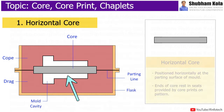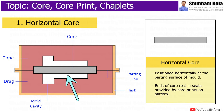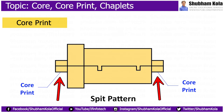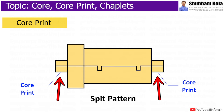The horizontal core is positioned horizontally at the parting surface of the mold. The ends of the core rest in seats provided by core prints on the pattern. Core prints are recesses added to the pattern, which form a seat in the mold on which the sand core rests. Core prints must be of sufficient size and shape so that they can hold the weight of the core during the casting process.